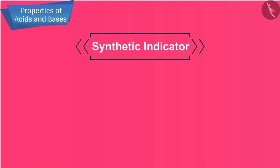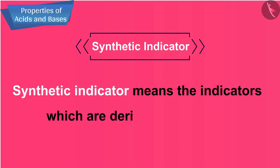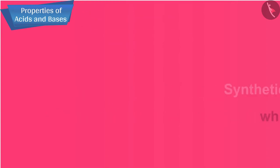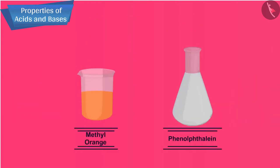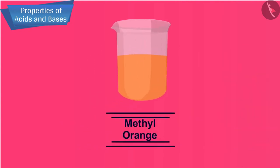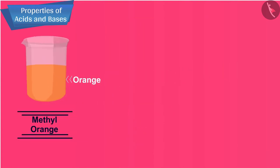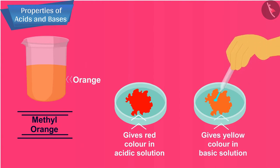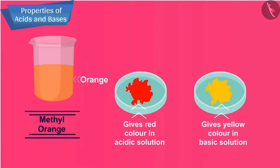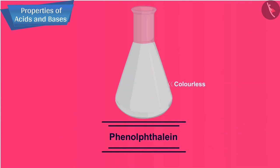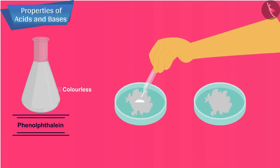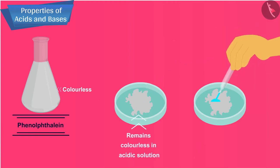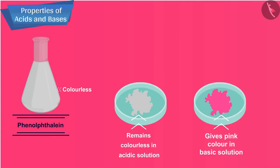You can also use synthetic indicators — indicators which are derived chemically — such as methyl orange and phenolphthalein to test for acids and bases. The colour of methyl orange in a neutral solution is orange; it gives red colour in acidic solution and yellow colour in basic solution. The colour of phenolphthalein in a neutral solution is colourless; it remains colourless in acidic solution and gives a pink colour in a basic solution.